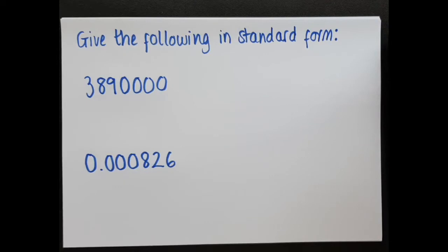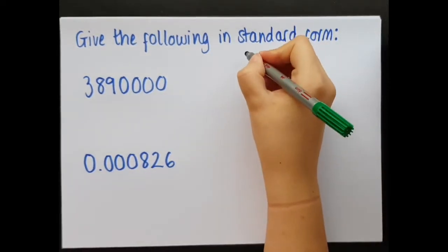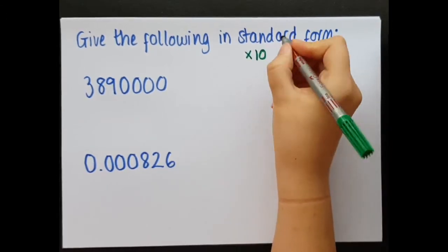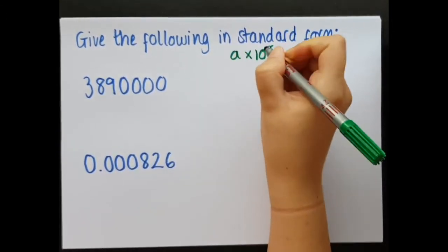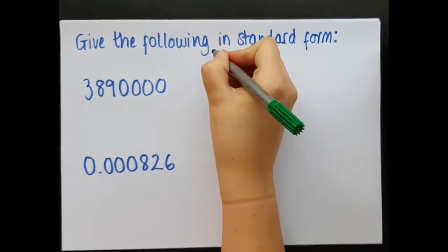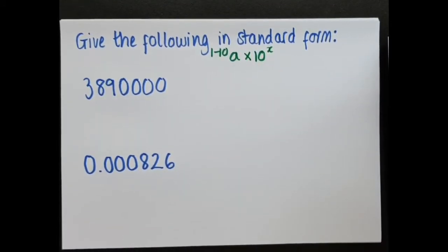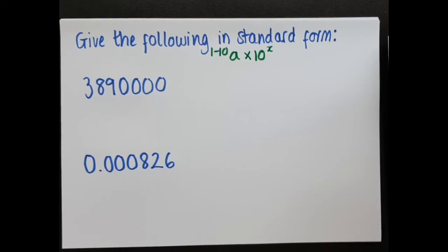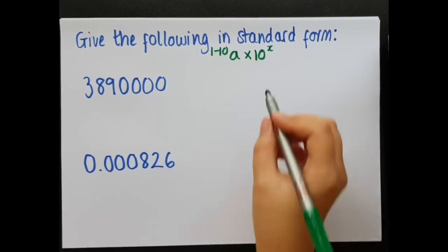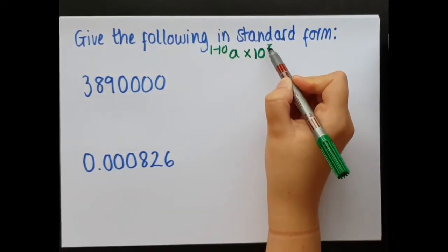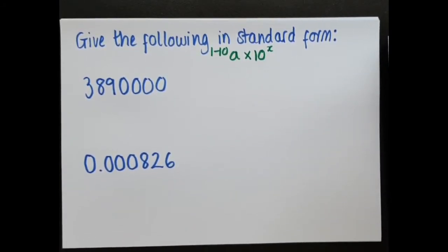So, the goal of standard form is to have a number in a format where a is a number between 1 and 10, although technically between 1 and 9.999999 inclusive. It's times 10 to the power of something, so that x is just a something.